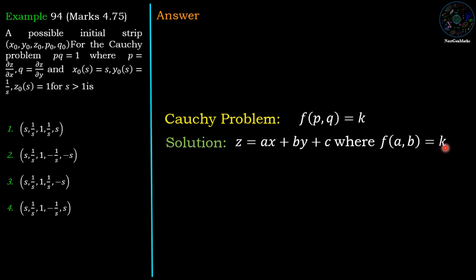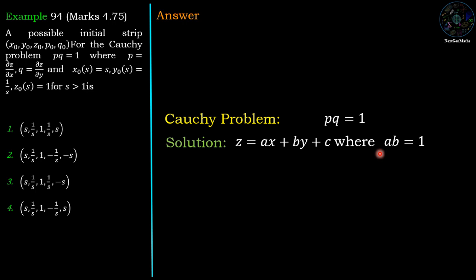For the given example, our problem is pq = 1. The corresponding solution is z = ax + by + c, where replacing p by a and q by b gives ab = 1. Making b the subject: b = 1/a. Substituting back, the solution is z = ax + (1/a)y + c. This is the solution of pq = 1.